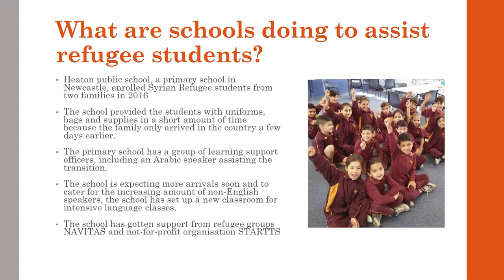What are schools doing to assist refugee students? Heaton Public School, a primary school in Newcastle, enrolled Syrian refugee students from two families in 2016. The school provided the students with uniforms, bags and supplies in a short amount of time because the families had only arrived in the country a few days earlier. The primary school has a group of learning support officers which includes an Arabic speaker assisting their transition. The school is expecting more arrivals and has set up a new classroom for intensive language classes, and has also gotten help from refugee groups and not-for-profit organisations.